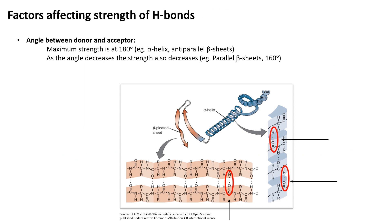Now, what are the factors that affect the strength of hydrogen bonding? The first factor is the angle between donor and acceptor. The maximum strength of a hydrogen bond is seen when the angle is 180 degrees. In the figure, you can see the structure of an alpha helix and a beta sheet — in both cases the angle is 180 degrees. If one atom donates hydrogen and another accepts it at 180 degrees, the hydrogen bond is at maximum strength. As the angle decreases, the strength also decreases, as seen in parallel beta sheets.